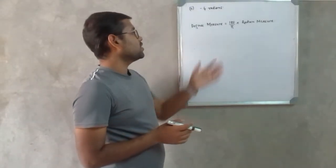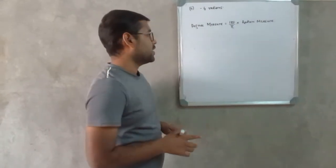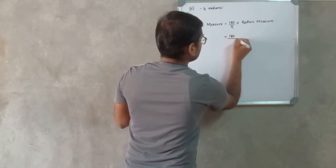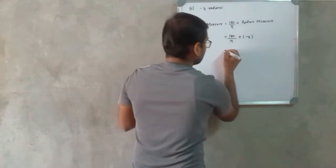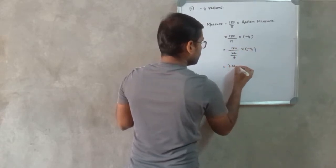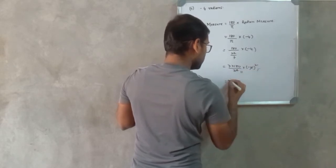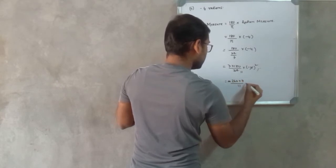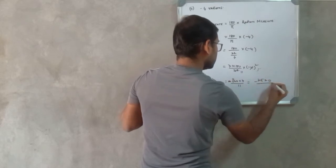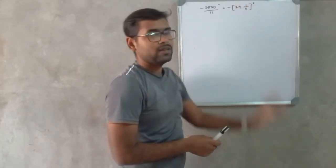Next, we have minus 4 radians and we need to find the corresponding degree measure. The minus sign indicates that the rotation is measured in the clockwise direction. Using the formula degree = (180/π) × radian measure and substituting minus 4, with π = 22/7, we get 7 × 180 ÷ 22 × (−4), which equals −2520/11, which can be written as minus 229 and 1/11 degrees.